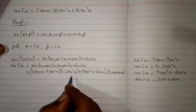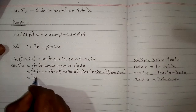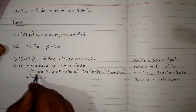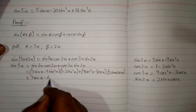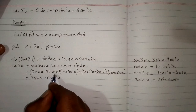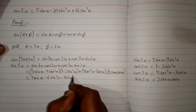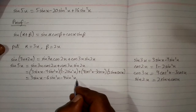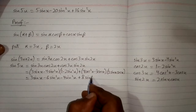Now we will expand these brackets. We get: 3 sine x multiplied by 1, then 3 sine x multiplied by minus 2 sine squared x. Minus 4 sine cubed x multiplied by 1, and minus 4 sine cubed x multiplied by minus 2 sine squared x gives plus 8 sine to the power 5x.